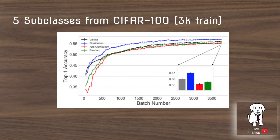The results on the first test case — five subclasses from CIFAR-100 — show just a small improvement of about 1% accuracy using curriculum learning compared to standard SGD. The anti-curriculum method shows roughly 1% worse than standard SGD. It is still interesting to observe a clear difference between ascending versus descending difficulty sorting in how samples are introduced to the model.